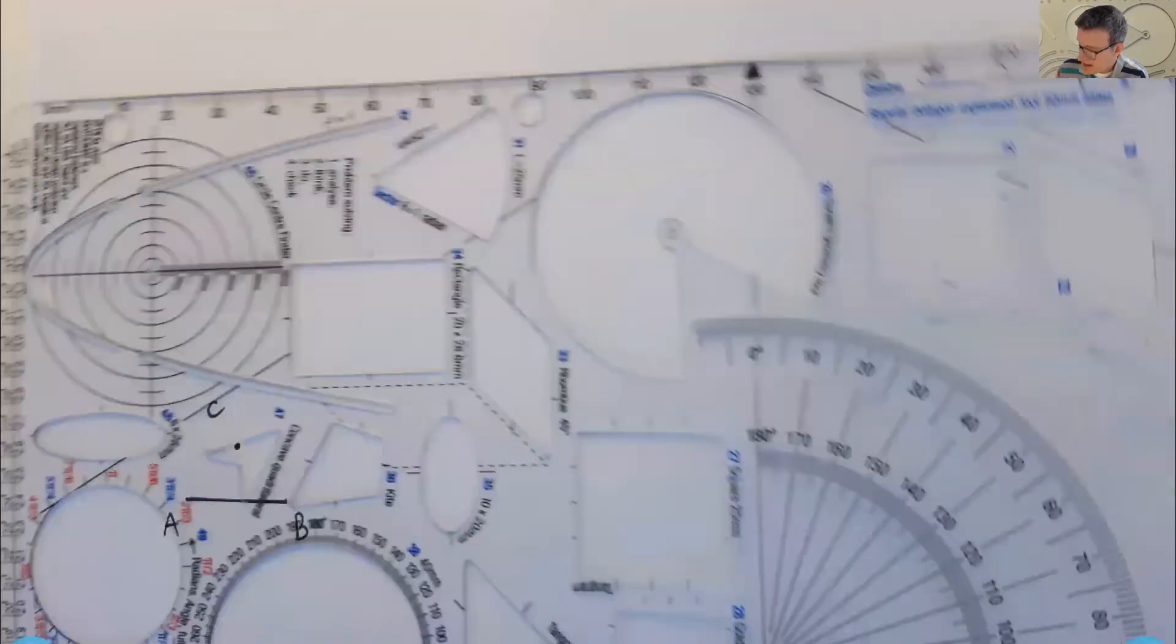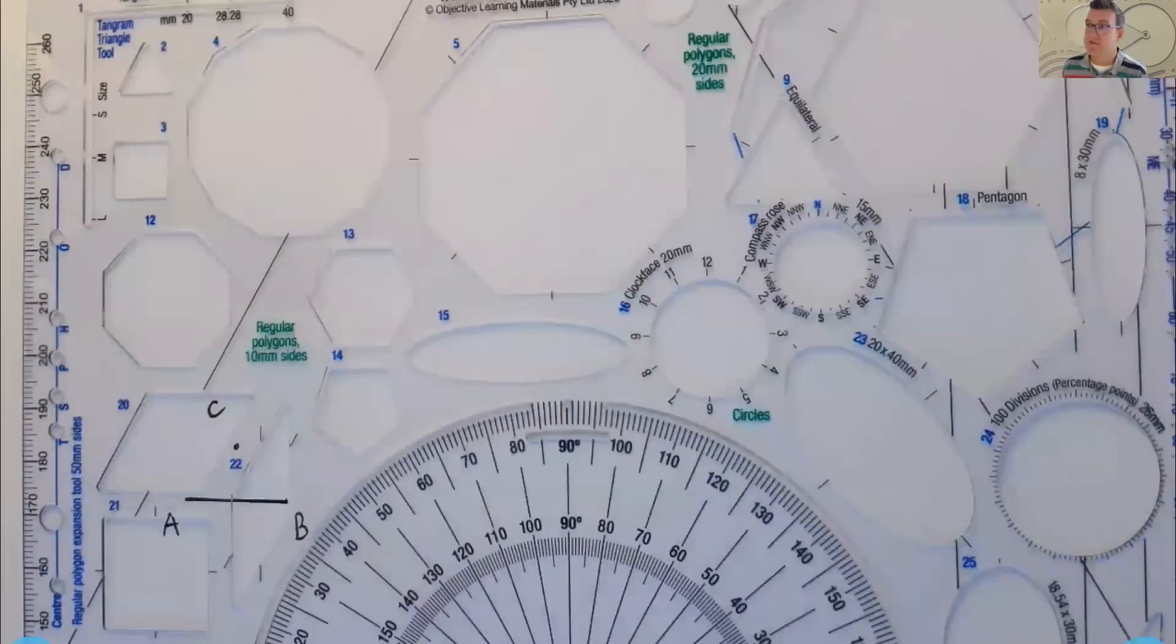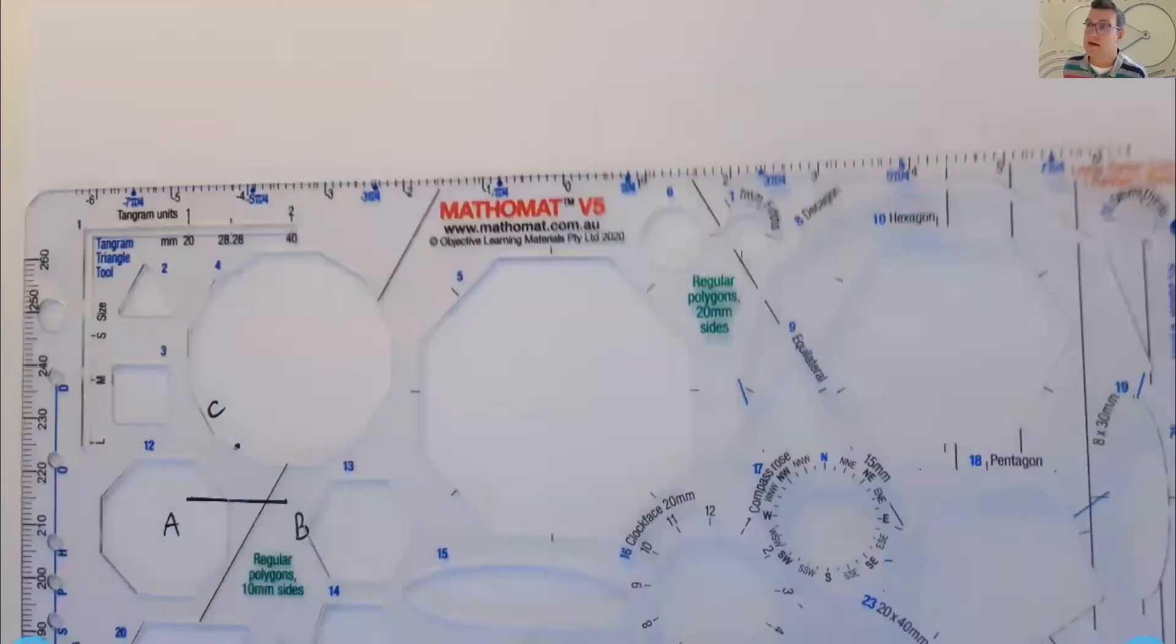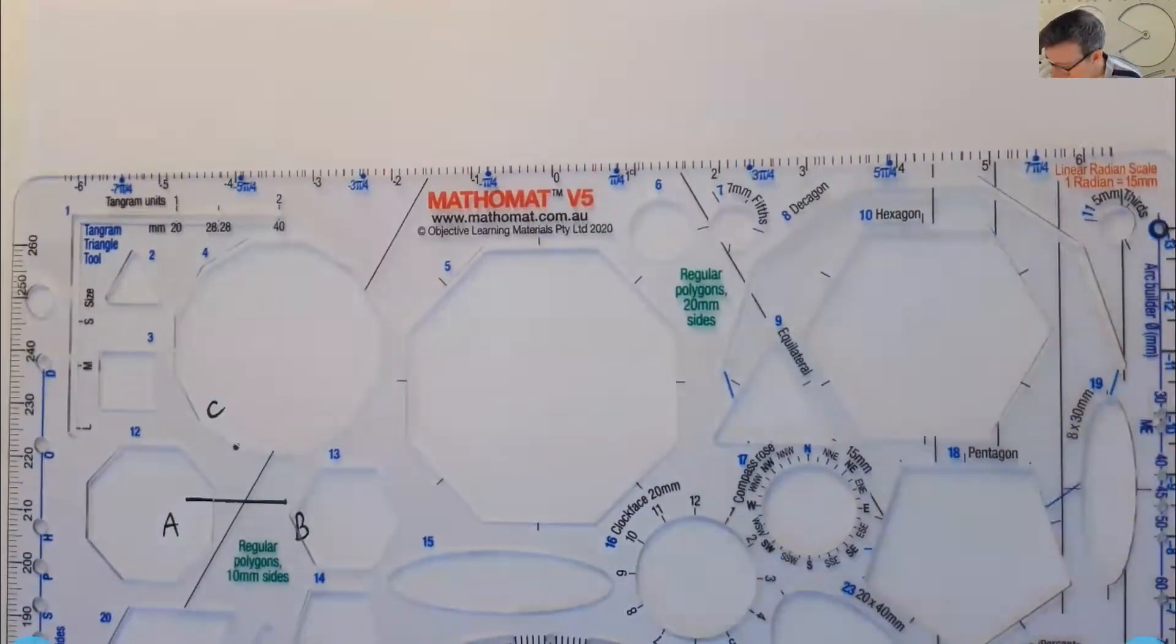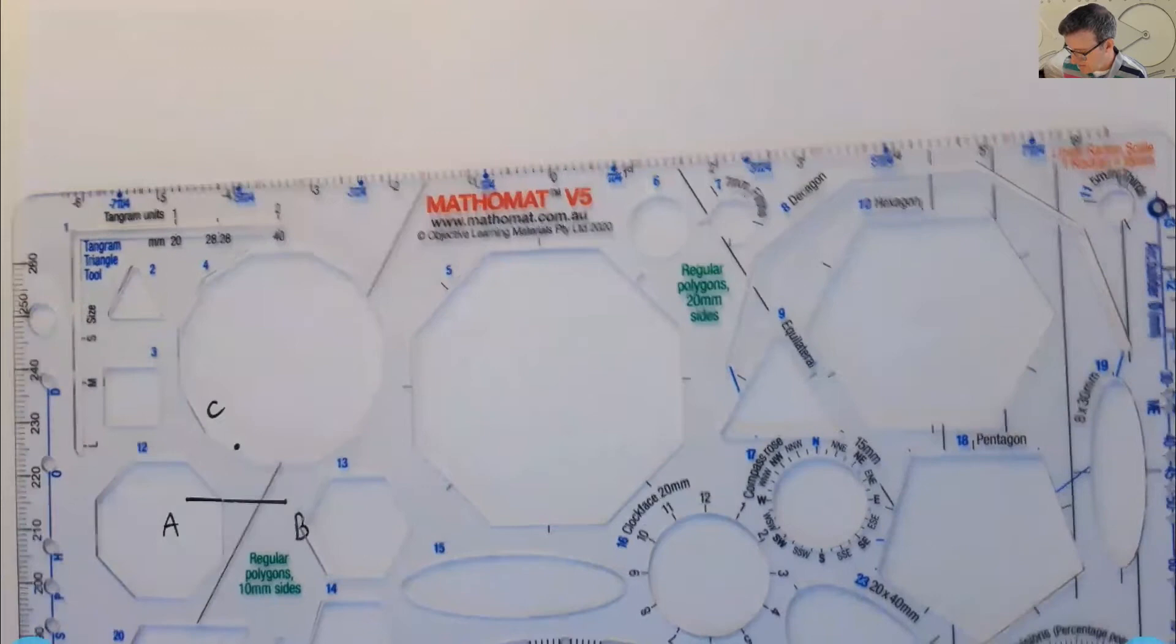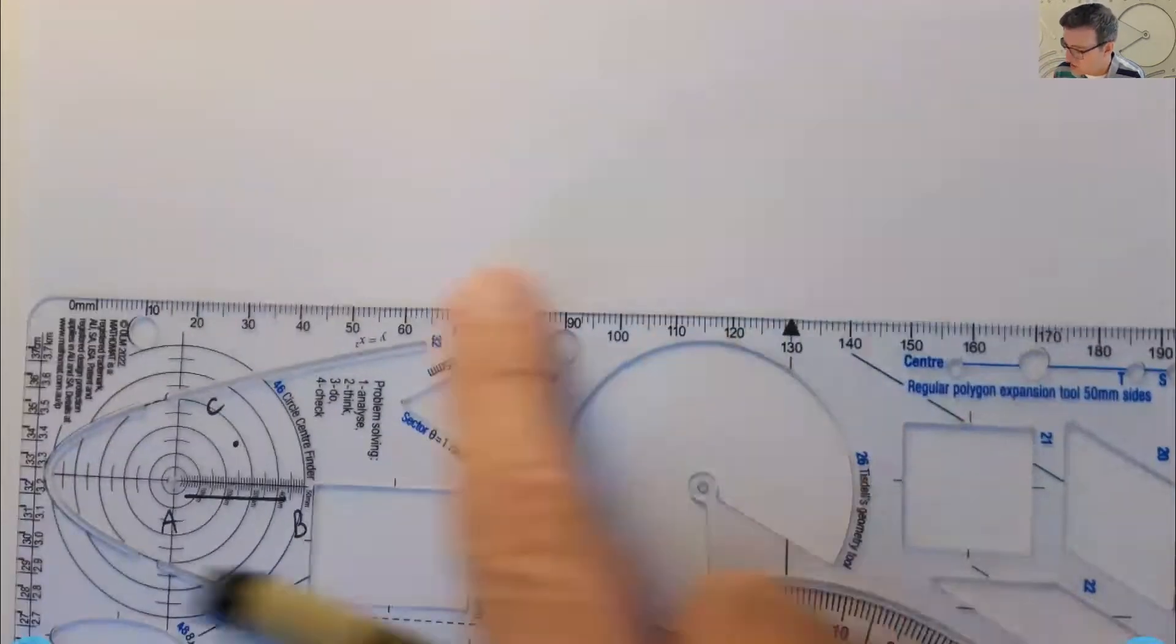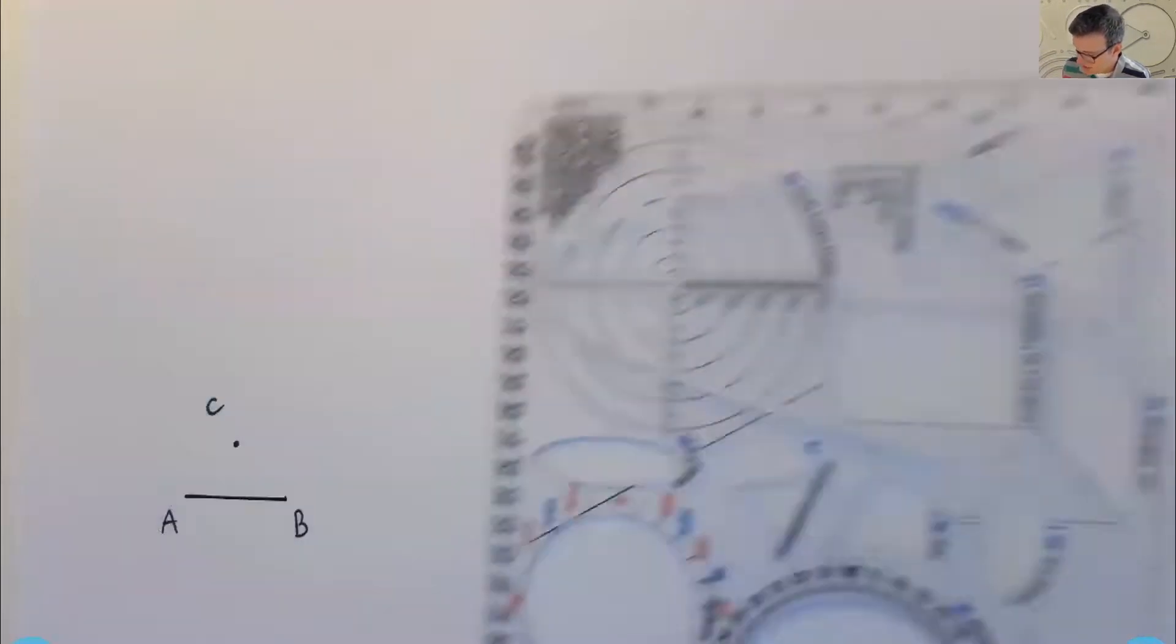And these two smaller tools are part of a larger, more sophisticated tool called a Mathemat. And there's lots of interesting shapes and markings in here. But for our purposes, these are the only two things that we'll be looking at.